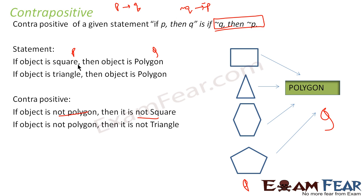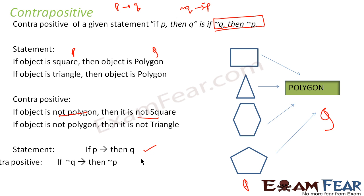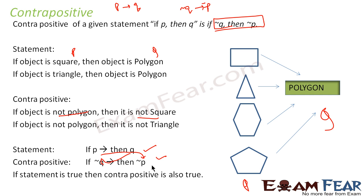So the same thing we have done here: the contrapositive of 'if object is square/triangle then it is polygon' is 'if the object is not a polygon, then the object is not square/not triangle.' To repeat: if p then q is the statement, then if not q then not p is the contrapositive.